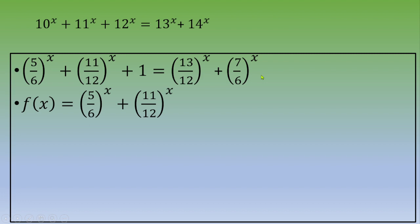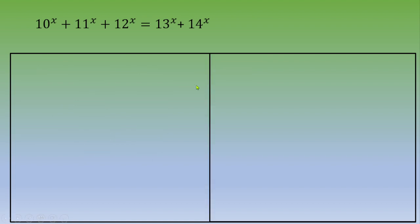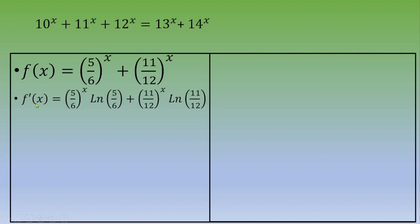Let's call a function g(x) = (13/12)^x + (7/6)^x. Now one way to solve is to study these two functions. If you calculate f'(x), you get (5/6)^x ln(5/6) + (11/12)^x ln(11/12).